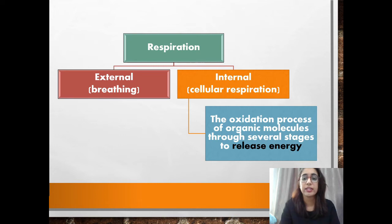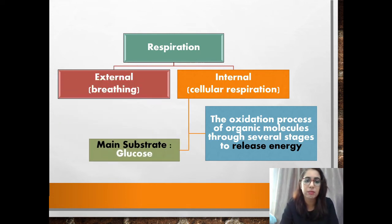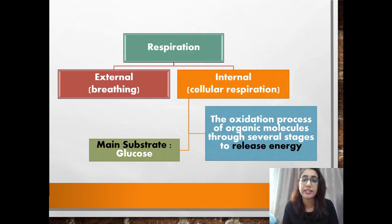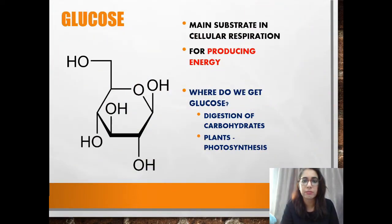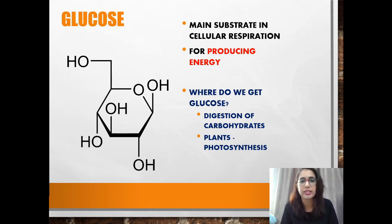In this chapter, you are going to focus on internal respiration, or cellular respiration. Cellular respiration is the oxidation process of organic molecules through several stages to release energy. The main substrate needed to release energy is glucose. Glucose can be obtained in humans and animals through digestion of carbohydrates from the food that we eat. In green plants, light energy can be trapped by chlorophyll for the photosynthesis process to produce glucose. So glucose is the main substrate in cellular respiration for producing energy — it's not a form of energy, but a stored product from the digestion of carbohydrates. Glucose is stored in the liver in the form of glycogen, and it's broken down to produce energy for other activities in the body.